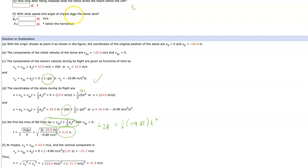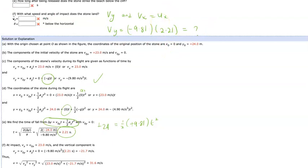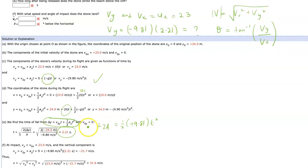To find the speed and angle of impact, first find V_X and V_Y. V_X equals U_X = 23 m/s. V_Y = minus 9.81 times the time we found — approximately 2.21 seconds — giving the vertical speed at impact. Then find the magnitude: V = √(V_X² + V_Y²). Find the direction using inverse tangent of V_Y over V_X to get the angle of impact. Using those values gives the correct result.